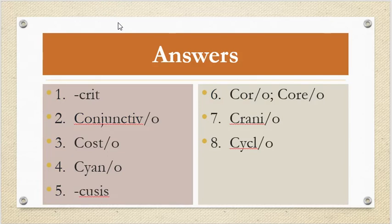Answers: number 1, crit. Number 2, conjunctivo. Number 3, costo. Number 4, cyano. Number 5, cusis. Number 6, coro and corio. Number 7, cranio. Number 8, cyclo.